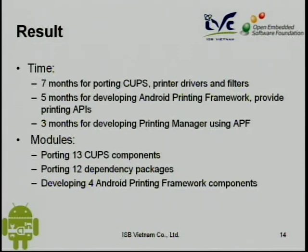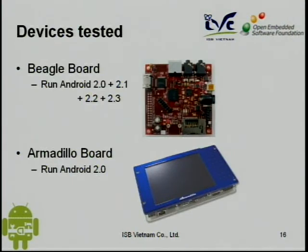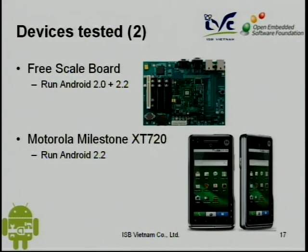About the modules: we ported 13 CUPS components and 12 dependency packages. We also developed four Android Printing Framework components for APF. About protocols: at this time we support direct USB, so you can connect your printer directly to your smartphone and print directly, and IPP (Internet Printing Protocol), which supports both client and server side. About printers: at this time we support 80 printer models, including HP, Samsung, OKI, and other manufacturers. About devices: we tested on the BeagleBoard device, which can run Android 2.0, 2.1, 2.2, and 2.3 with APF inside, and can print directly to the printer via USB and IPP.